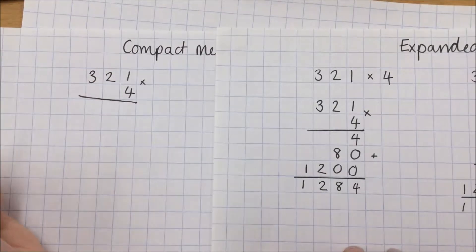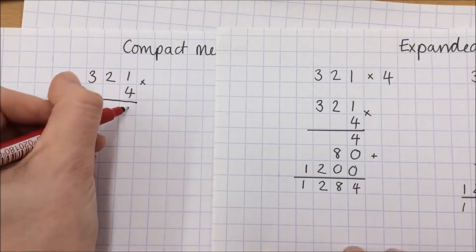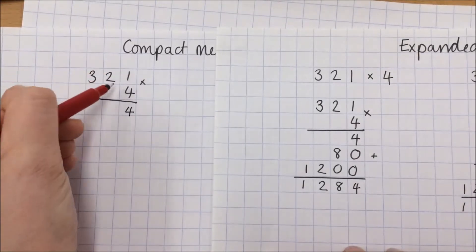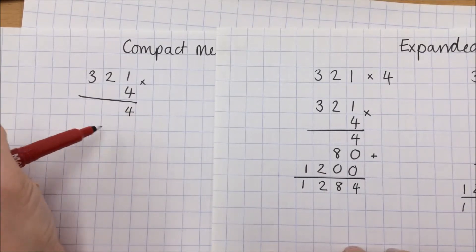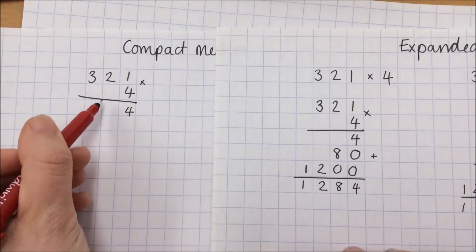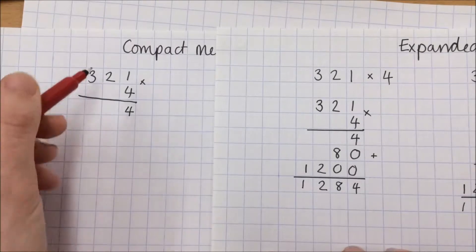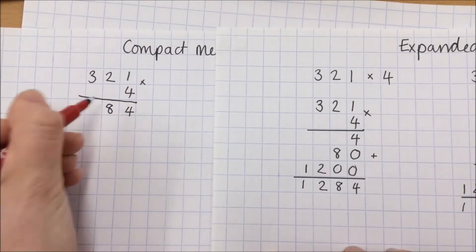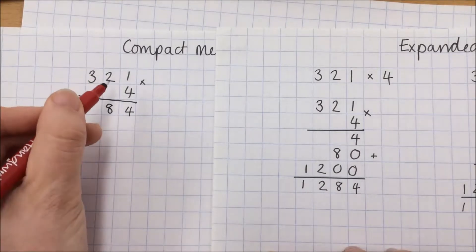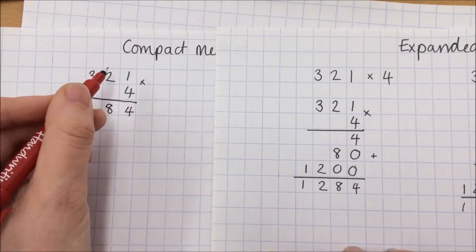321 multiplied by 4. Here we go. 1 times by 4 is 4. Now this is still 20 multiplied by 4, but because I'm not putting it underneath, I'm using this tens section to write my answer. So 20 multiplied by 4 is 80. Some children at this point would be saying 1 times by 4, 2 times by 4, 3 times by 4...